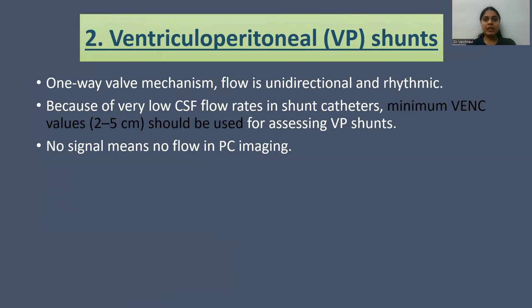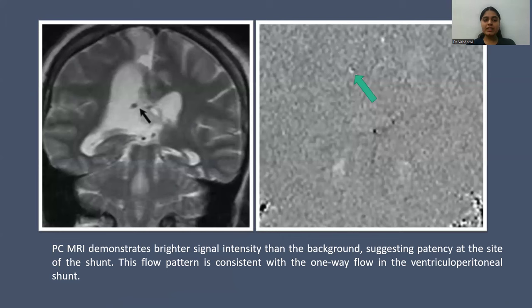In VP shunts, it is a one-way valve mechanism — the flow is unidirectional and rhythmic. Because of very low CSF flow rates in shunt catheters, a minimum VEC of between 2–5 cm/s is used for assessing VP shunts. No signal means no flow on phase contrast imaging. As we can see here, in phase contrast MRI, it demonstrates a bright signal compared to the background, which suggests patency at the site of the shunt. This flow pattern is consistent with one-way flow in the VP shunt.